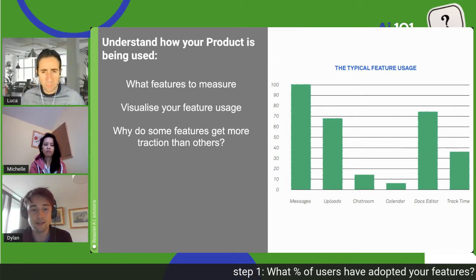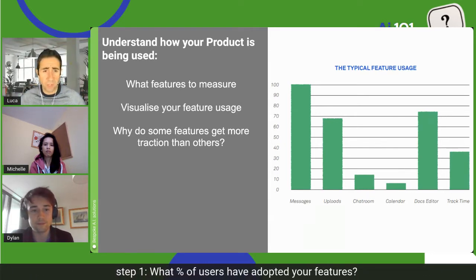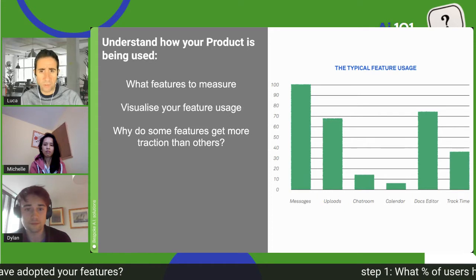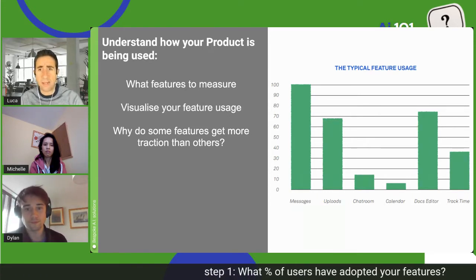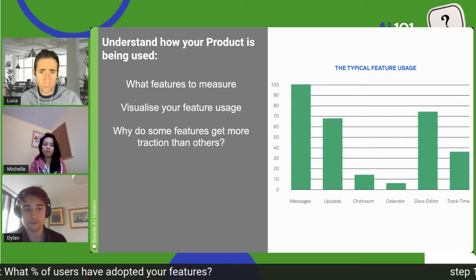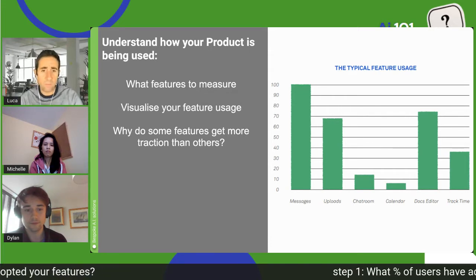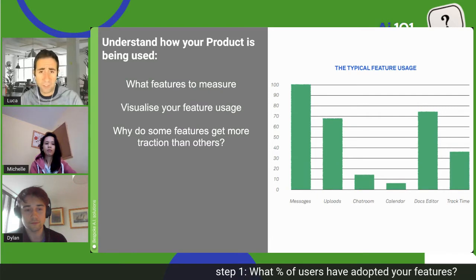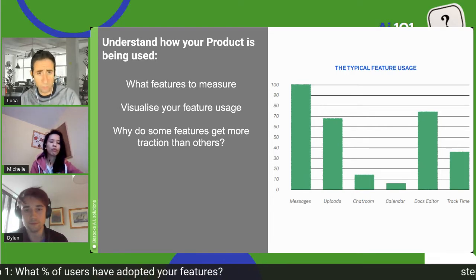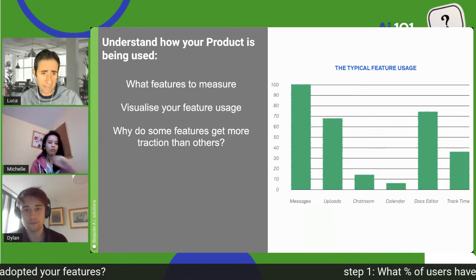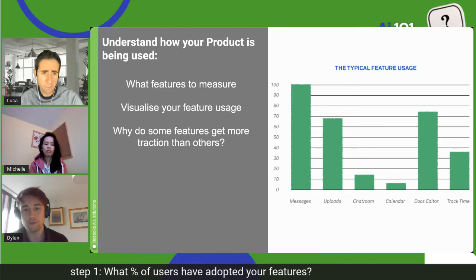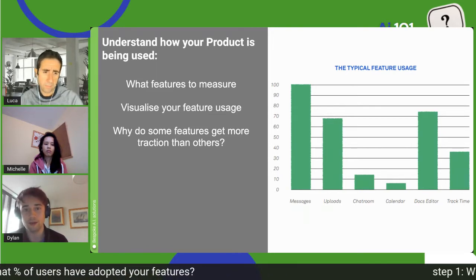We have to measure the usage of features — there are multiple tools for that, like Mixpanel for instance. Once we measure how popular a feature is, we're able to reason about what else to deploy, what to kill, and what to invest in more. It's important to have a plan for tracking customer feedback and data, because these things can make huge inroads into your decisions about how the product develops.